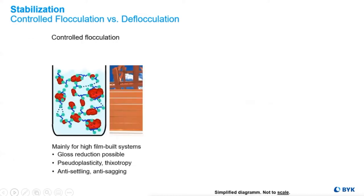What are the pros and cons? Controlled flocculation may have gloss reduction, but in part builds thixotropy in the system and provides anti-settling and anti-sag. But this isn't complete pigment separation, so some of the grinding mechanisms or wetting aspects may be lessened. Also, you may see some color differences that might be sacrificed as well. But overall, we see these are excellent for functional coatings.